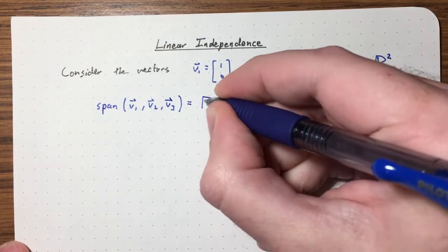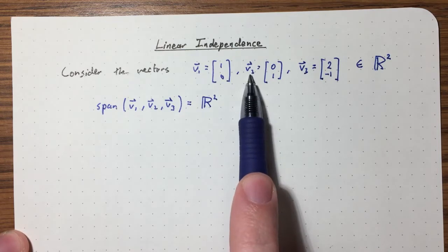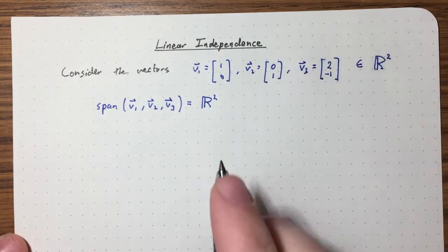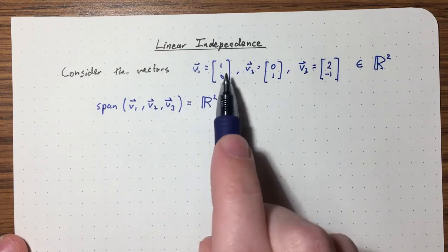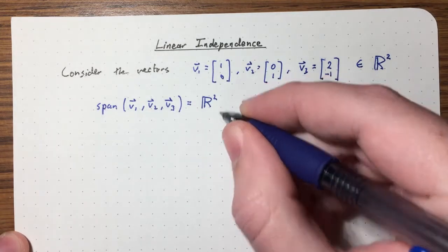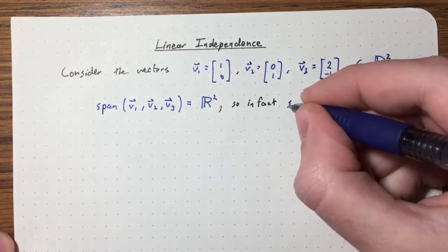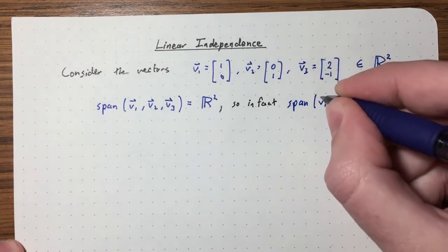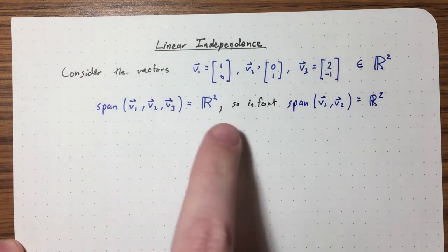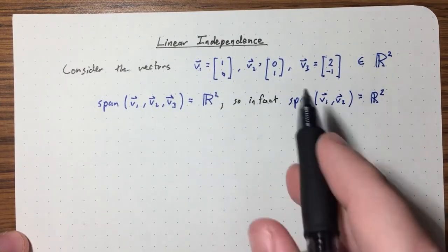The answer is all of R2. And in fact, you might notice that we could have just taken V1 and V2. These two vectors alone are enough to give us all of R2. To get the vector (A, B), you just take A of V1 and B of V2 — A is your scalar for one, B for the other. So we didn't have to take all three of them; just the span of V1 and V2 turns out to be R2.